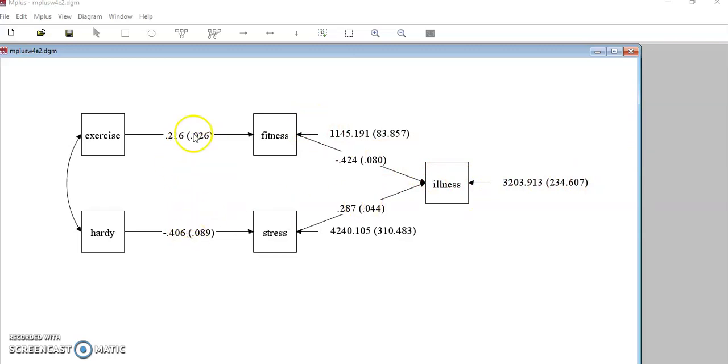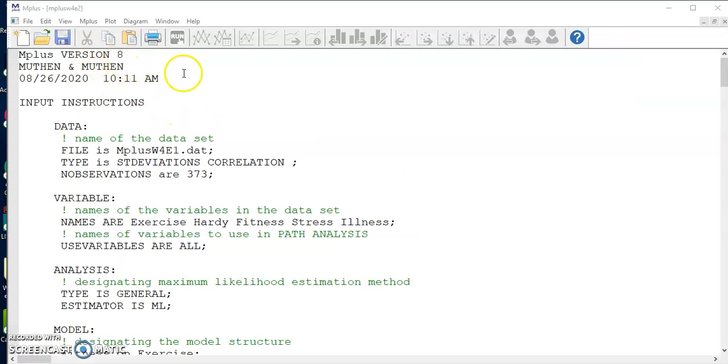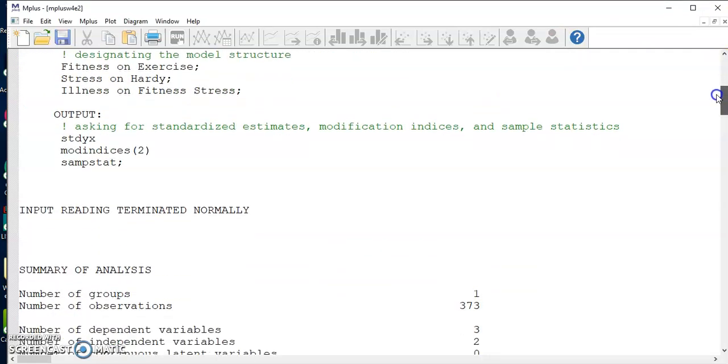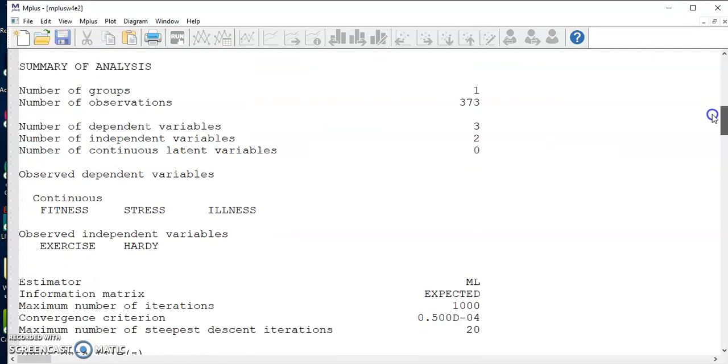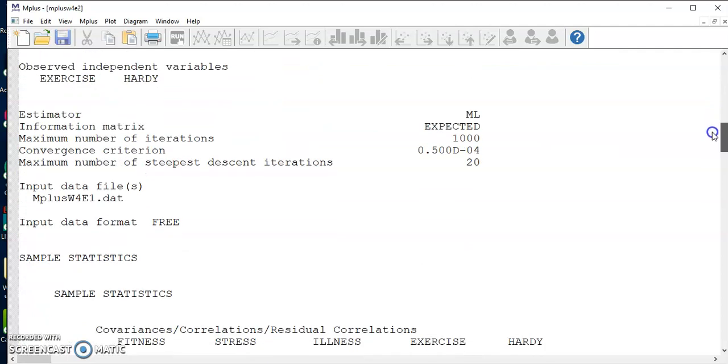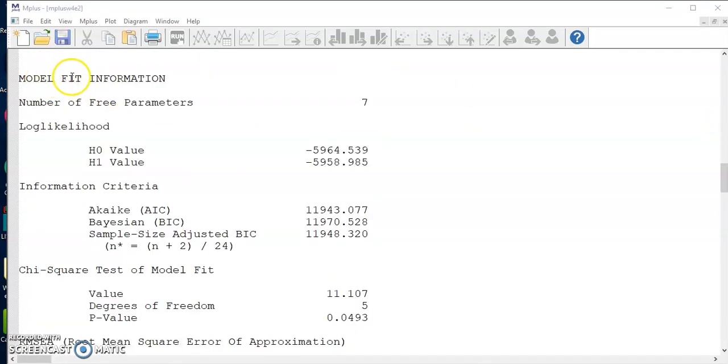The unstandardized model parameters are also made available here in the diagram. In the parentheses, you have the standard error for that given parameter. We went over an output file in the previous video and learned how to read the information, but we skipped the section about model fit indices. How to read the model fit indices will be the focus of this video.